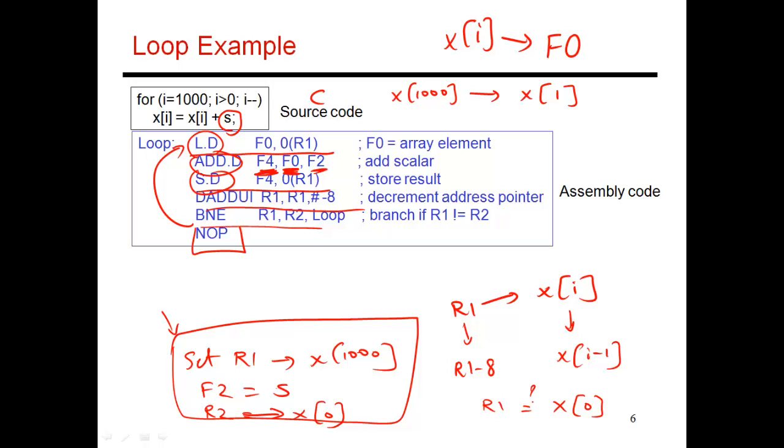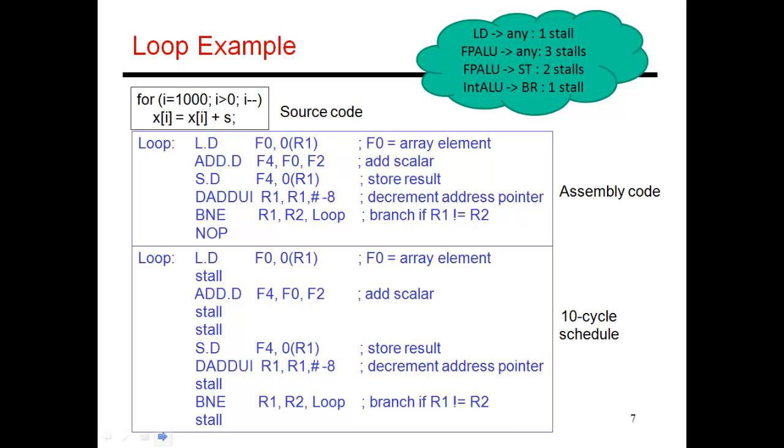The first question we need to answer is: I've produced this five or six instruction assembly code for my C source code. How long is this going to take to run on my example pipeline? Let's look at our cheat sheet and correspondingly introduce stalls. I have a load, and the value of the load feeds into this consuming add. Load feeding any instruction, one stall cycle. That's what I've introduced here. Then a floating point add, which feeds into a store. I'm producing a value in F4, which is then being used by the store. Floating point add feeding a store, two stall cycles. That's what I've introduced over here. Then the store is followed by this decrement of R1. There's no dependence over here, so there's no stall cycle.